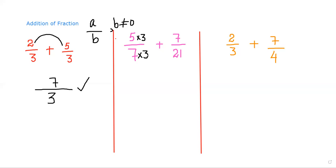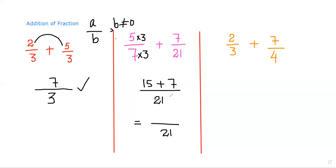So we multiply by 3 in the denominator and also multiply by 3 in the numerator of the first fraction. Now the denominator is 7 times 3 equals 21, same as the second fraction's 21. We write it one time. The numerator becomes 5 times 3 equals 15, plus 7, over 21. So 15 plus 7 equals 22, and 22 over 21 is the final answer.